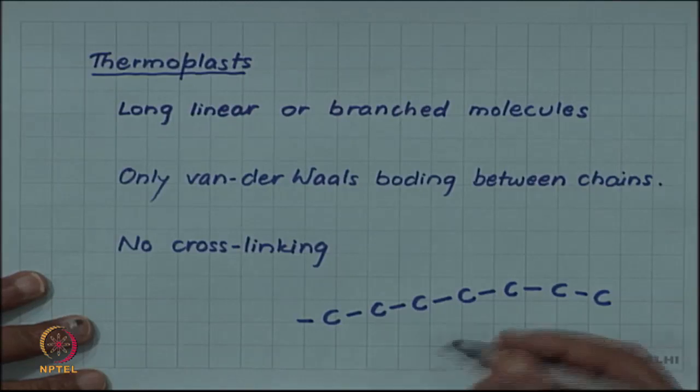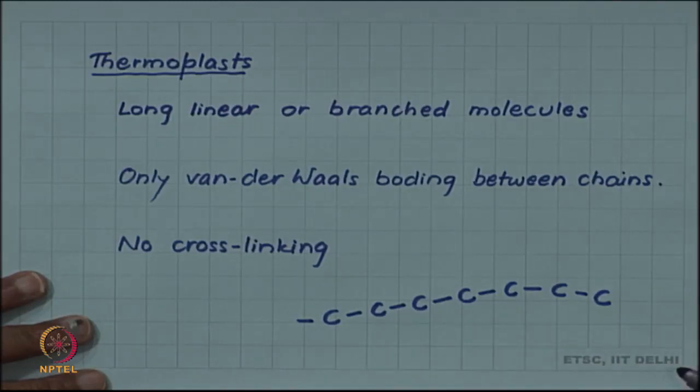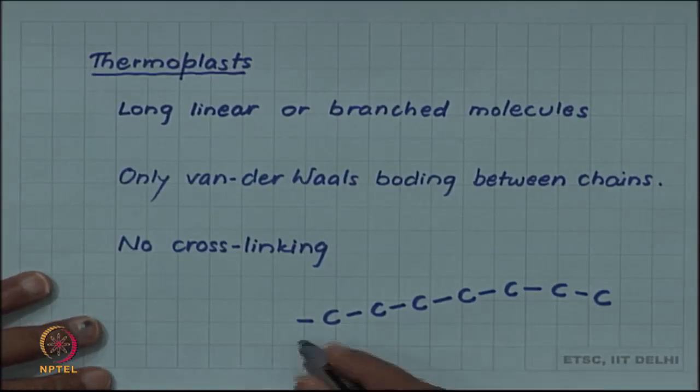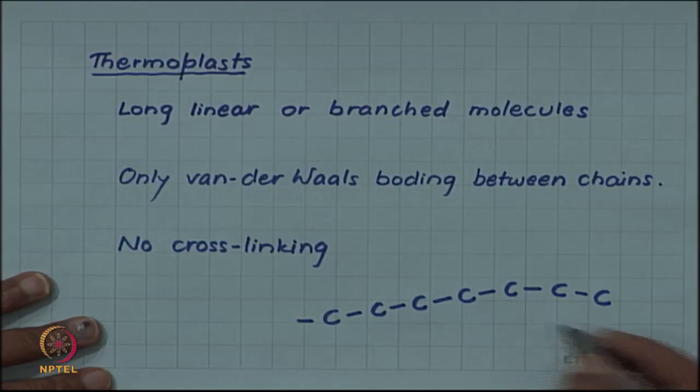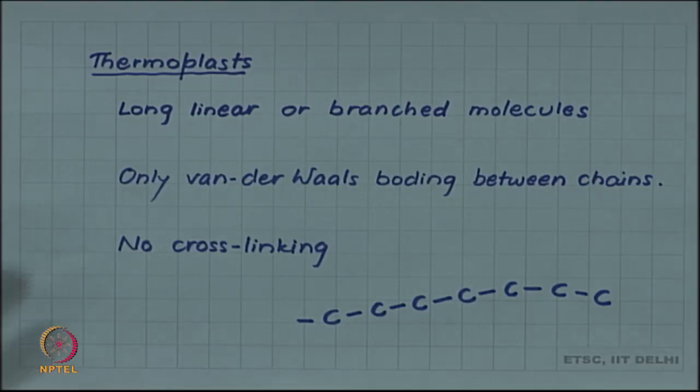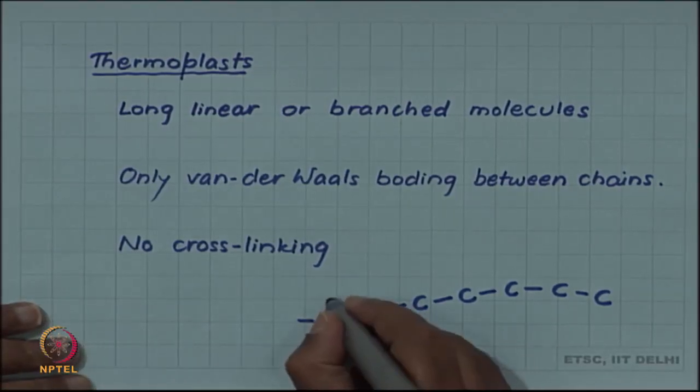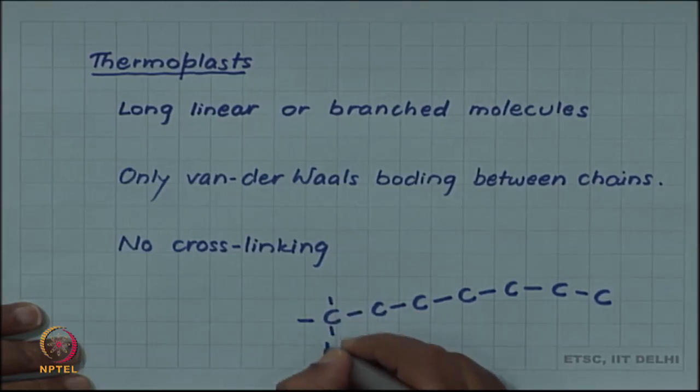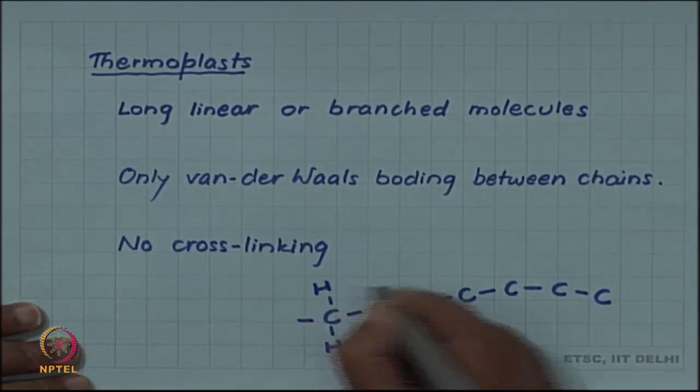About every bond there is a possibility of rotation, so it can take different shape in space. But all carbon atoms are along one line, let us say in polyethylene, but substituents and others are all hydrogen atoms. These are hydrogen atoms.